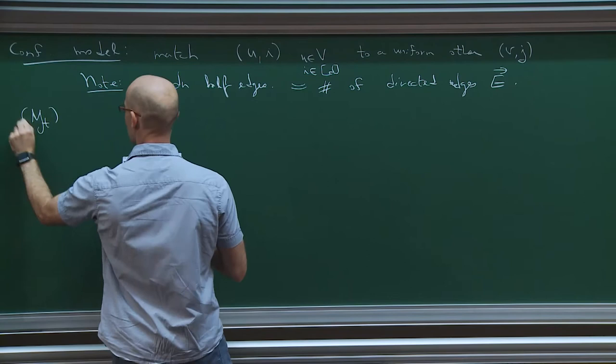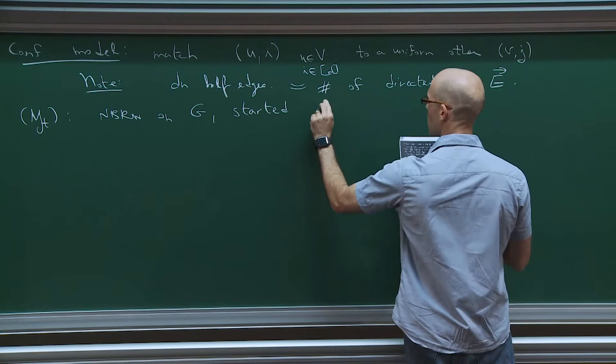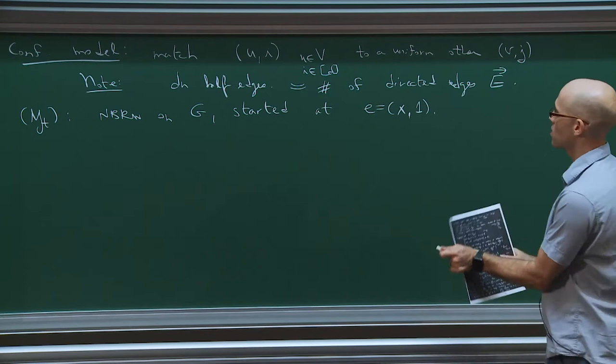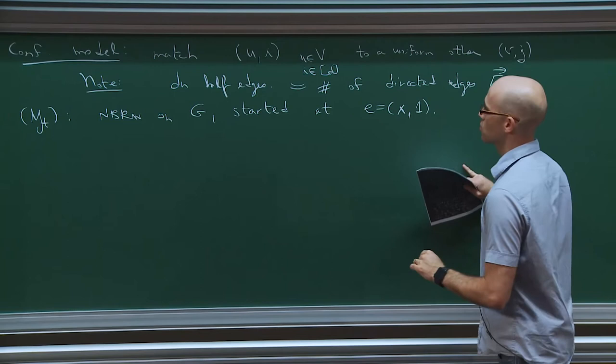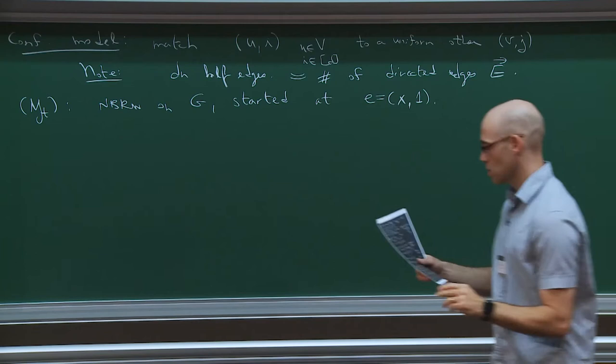Y_t is, as before, the non-backtracking random walk on G. We're going to start it at e, choosing some vertex x and some half edge. We identify directed edges with half edges — either the outgoing or incoming one. We start at a fixed e.